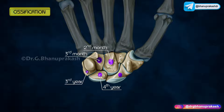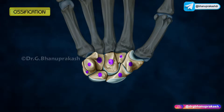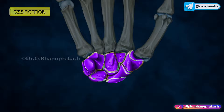The center for scaphoid, trapezium, and trapezoid appear in the fifth year. The center for pisiform appears between eight to twelve years. Ossification is completed between twenty to twenty-five years.